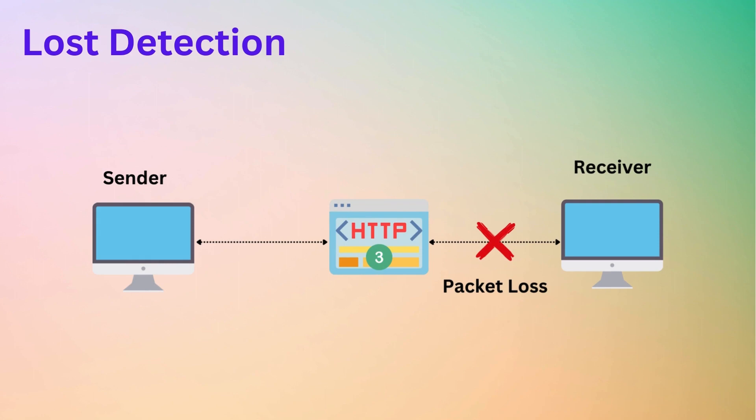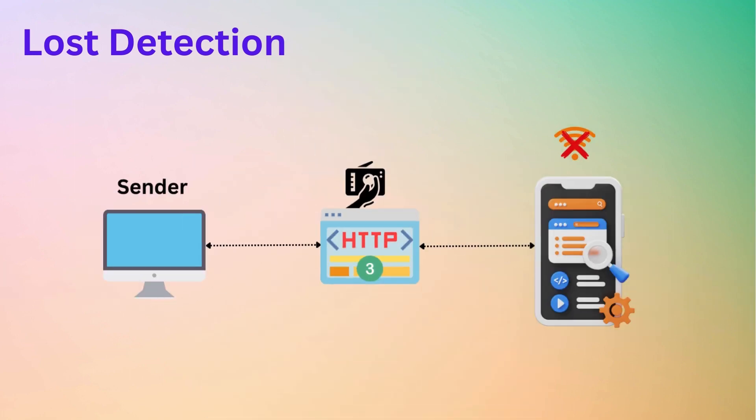In networking, loss detection refers to the ability of a communication protocol to identify when data packets are lost or not successfully delivered to the intended recipient. For example, consider a scenario where a mobile device experiences intermittent connectivity. In this case, the loss detection mechanism in HTTP3 can be tuned to be more tolerant of brief connection drops, minimizing unnecessary retransmissions and optimizing data transfer.